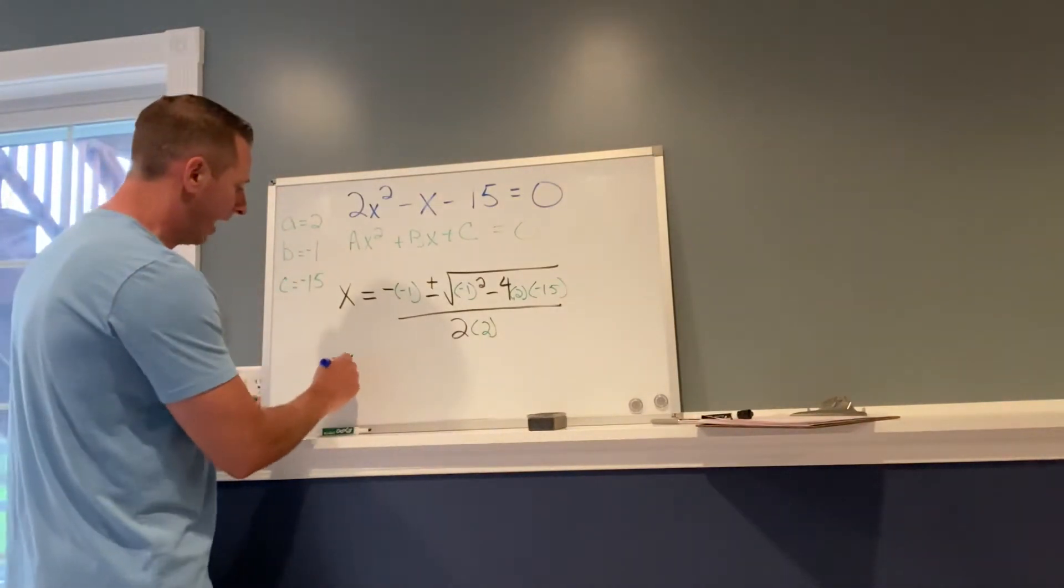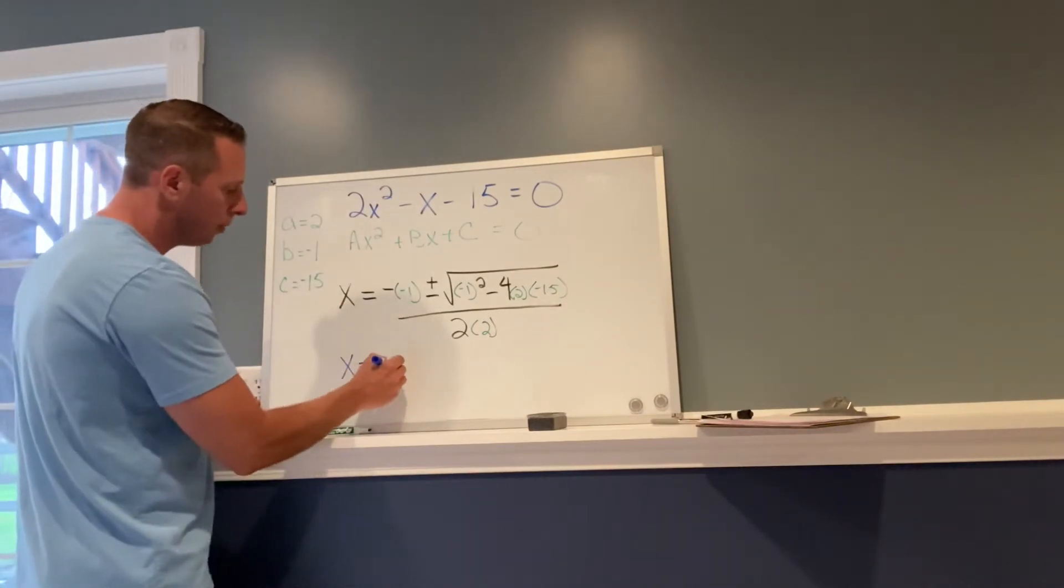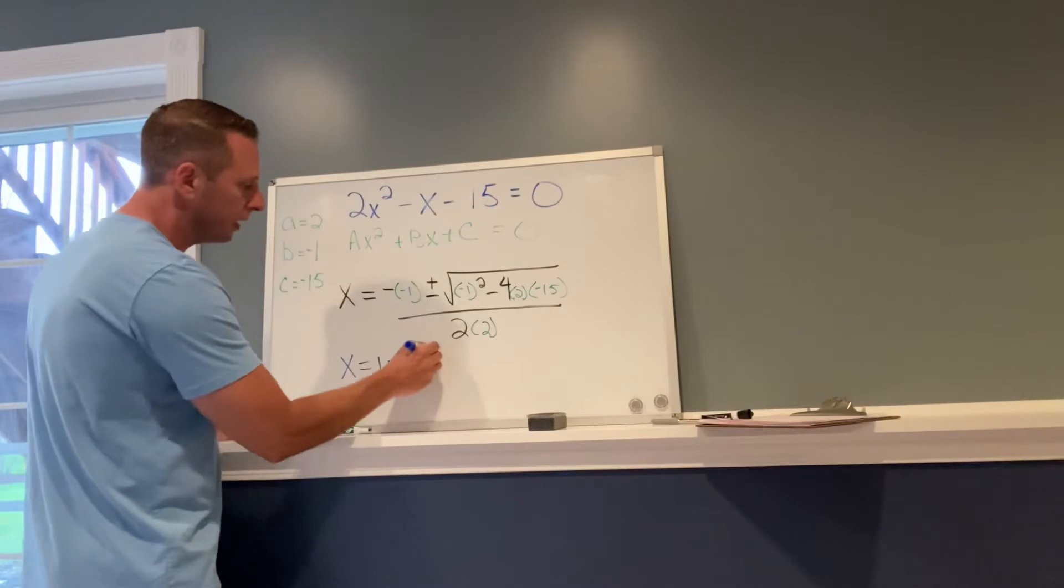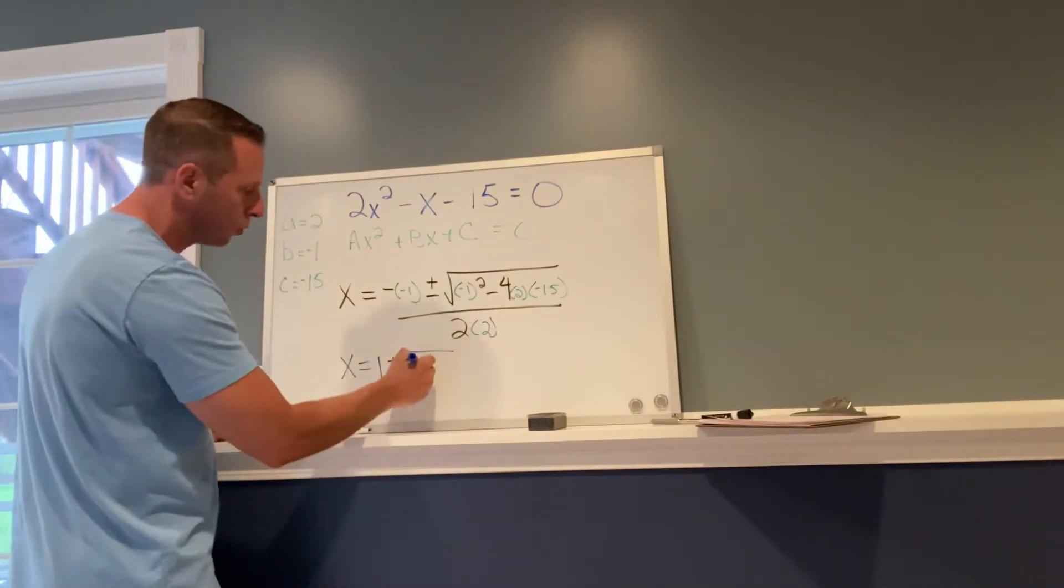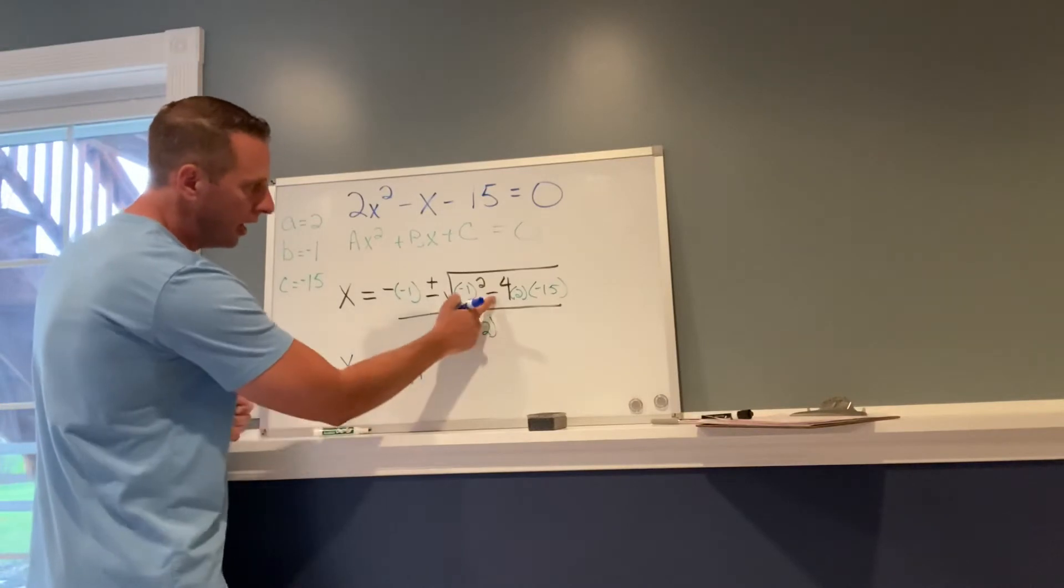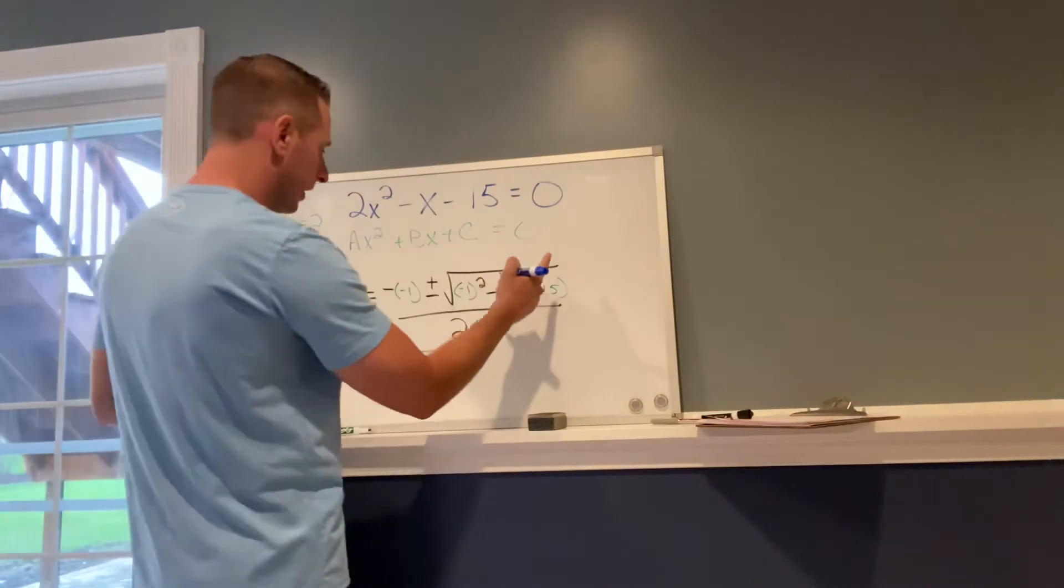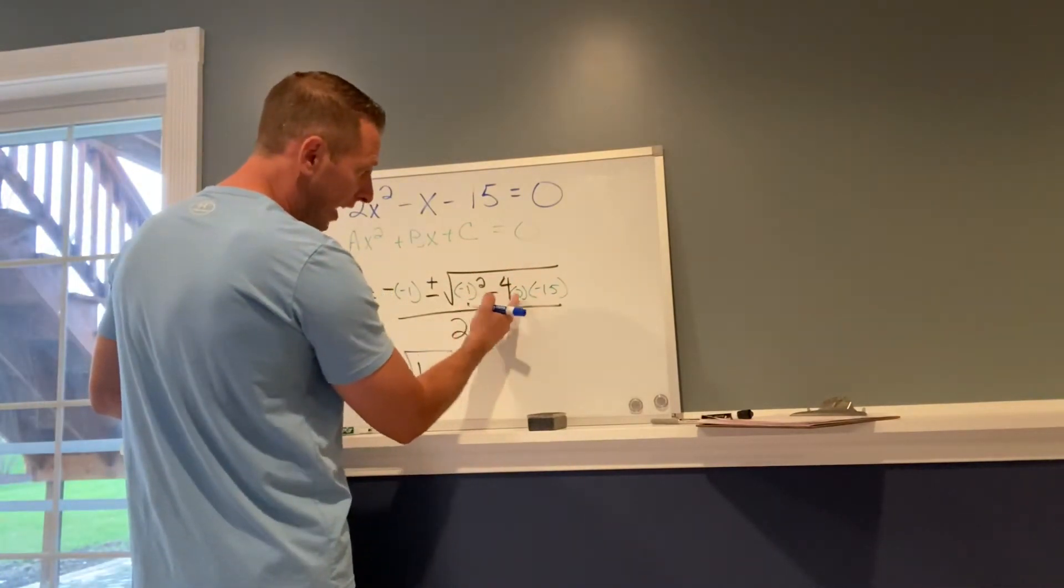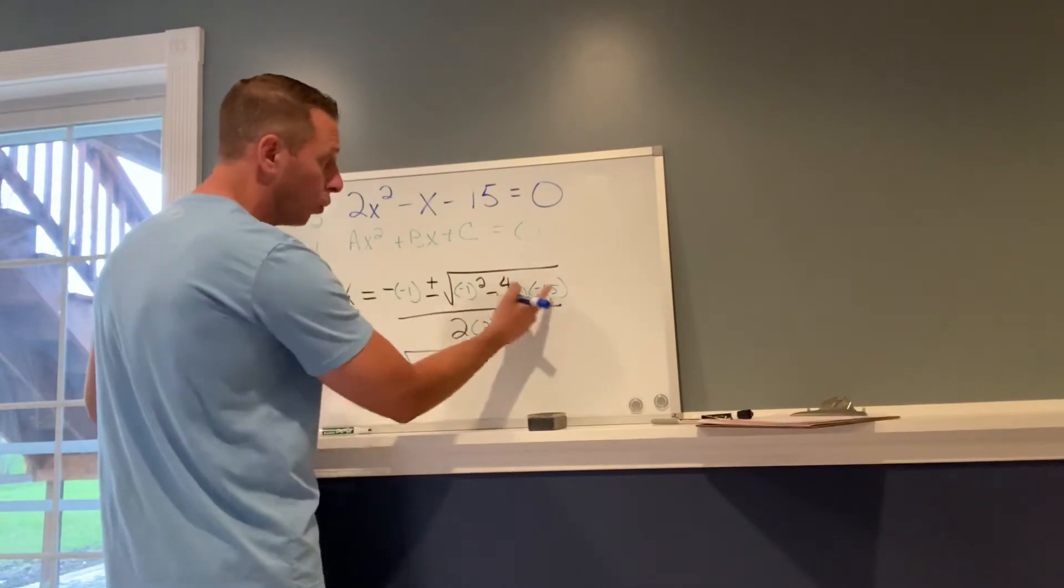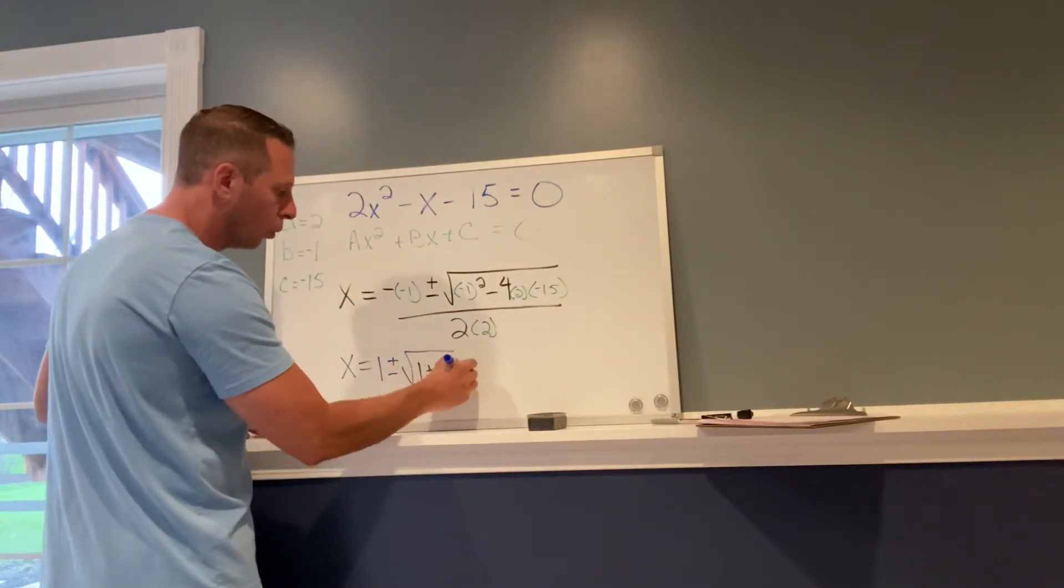So we're going to get x equals negative negative 1 becomes 1, plus or minus the square root of all this stuff. Negative 1 squared is 1. Negative 4 times 2 is negative 8. Negative 8 times 15, so that's negative 8 times negative 15 is 120. So this is going to be 1 plus 120.